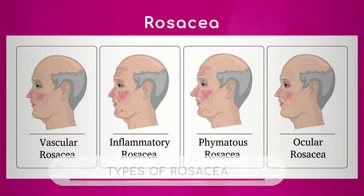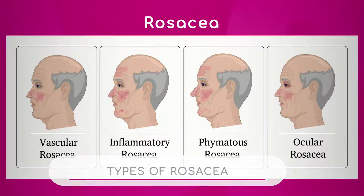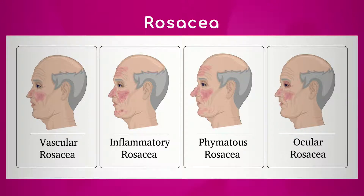Can you talk about these different subtypes? I think we have some pictures here. Let's go from left to right. So you have vascular rosacea, which is probably the most common one I see in practice. This is mainly when patients are presenting with that persistent facial redness, the episodes of flushing, and the visible blood vessels in the skin.